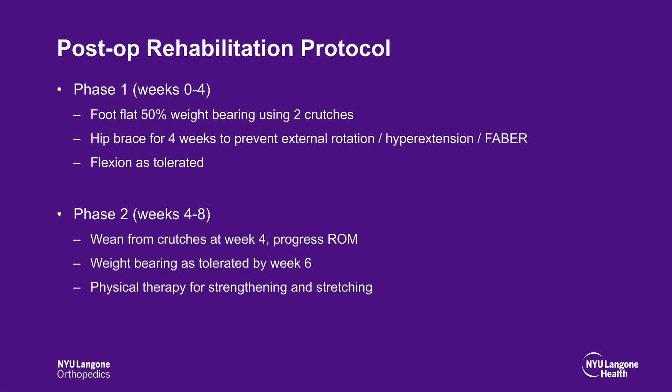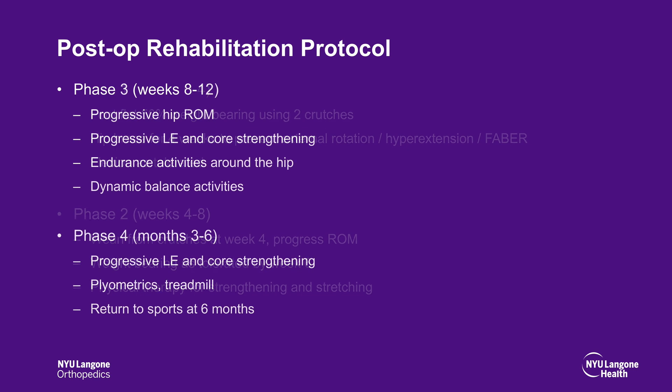Post-operative rehabilitation was initiated in four phases. In the first four weeks, the patient was made 50% weight-bearing with crutches and a hip brace to prevent external rotation, hyperextension, and FABER, but flexion as tolerated was allowed. For the next four weeks, the patient was weaned from crutches and range of motion was progressed with the goal of full weight-bearing by week 6. Strengthening and stretching exercises were initiated with physical therapy. Weeks 8 through 12 focused on progressive hip range of motion with progressive lower extremity and core strengthening exercises. In months 3 to 6, the patient progressed to plyometrics and treadmill, with return to sports at 6 months.